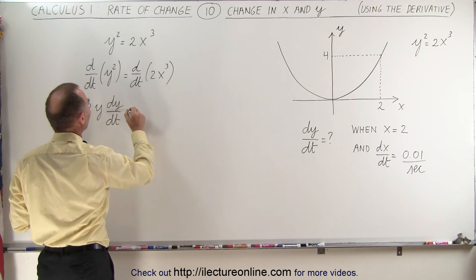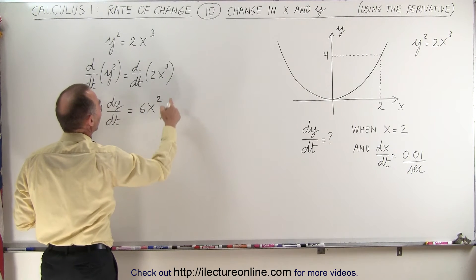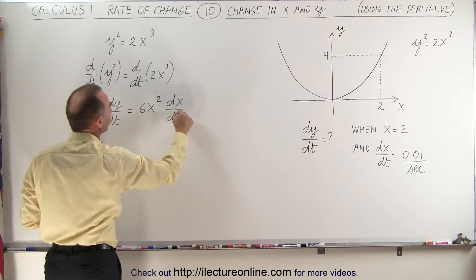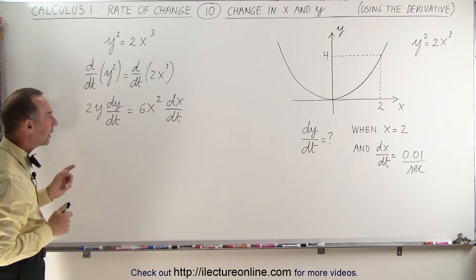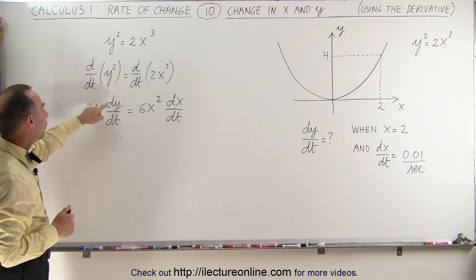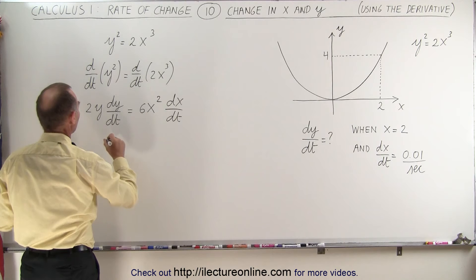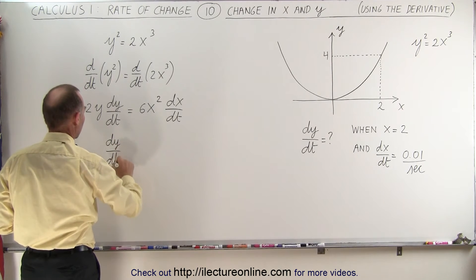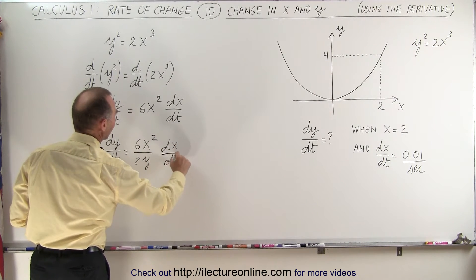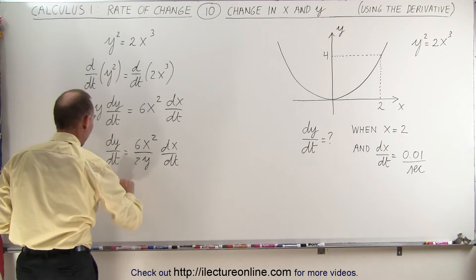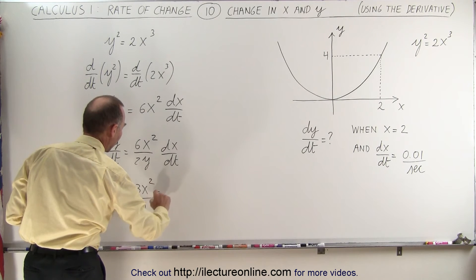On the right side, we bring the exponent down — that would be 6x squared — times dx/dt. So we get a dy/dt on the left side and a dx/dt on the right side. Now we isolate dy/dt, because that's what we're looking for. We divide both sides by 2y, giving us dy/dt equals 6x squared divided by 2y times dx/dt. The 6 and 2 simplify, so dy/dt equals 3x squared over y times dx/dt.